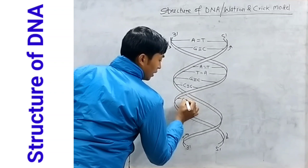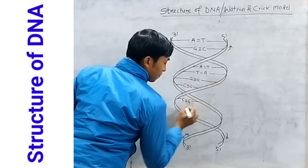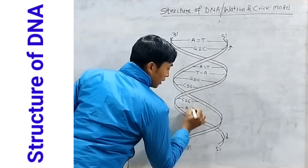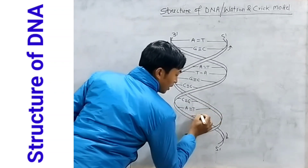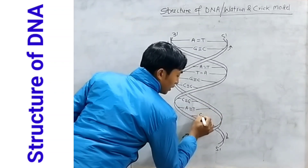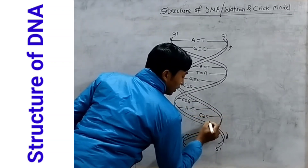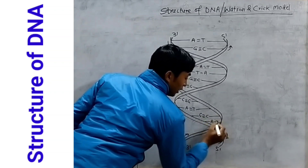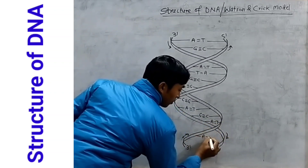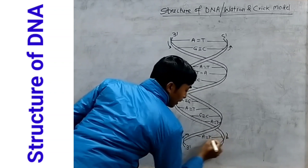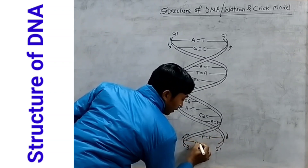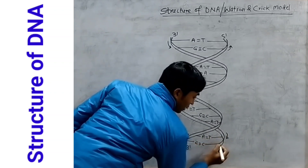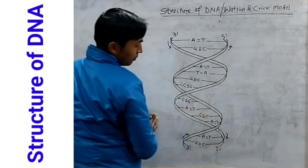C triple bond G, C triple bond G, A double bond T, A double bond T, A double bond T, A double bond T, G triple bond C. Like this.